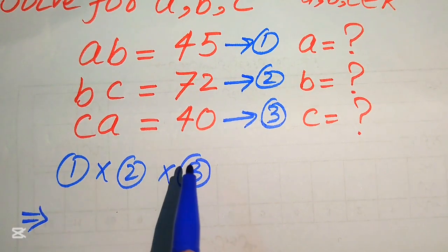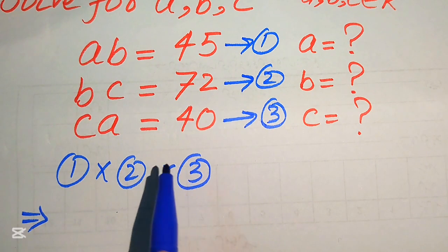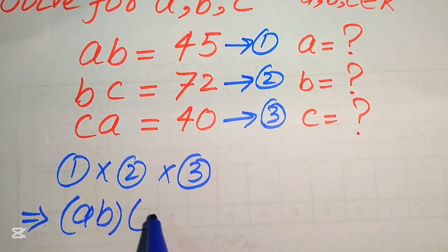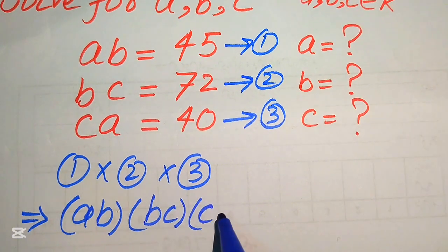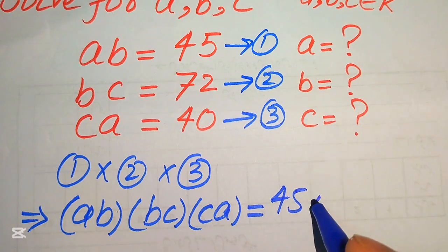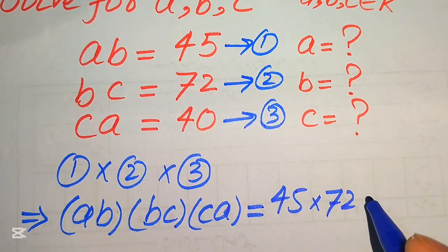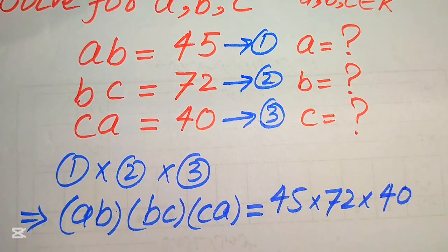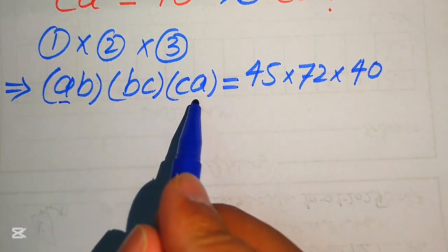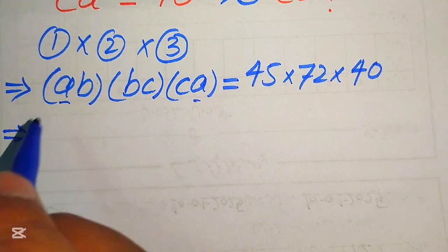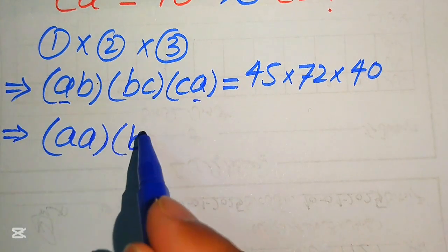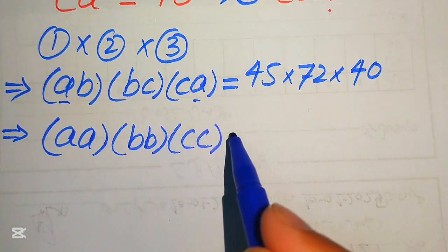When we multiply these equations, we multiply the left-hand side with the left-hand side and the right-hand side with the right-hand side. So we multiply AB with BC and BC with CA, and it equals 45 multiplied by 72 multiplied by 40. We rearrange the terms, making pairs: A with A, B with B, and C with C.